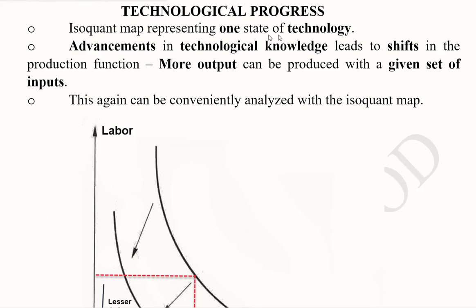It is one state of technology that we see in the isoquant map. We assume that the technology is not getting upgraded from the old point of view, from the classic point of view of economic theory.